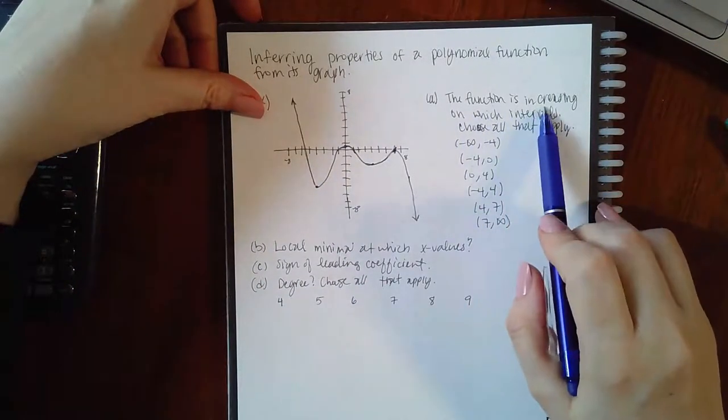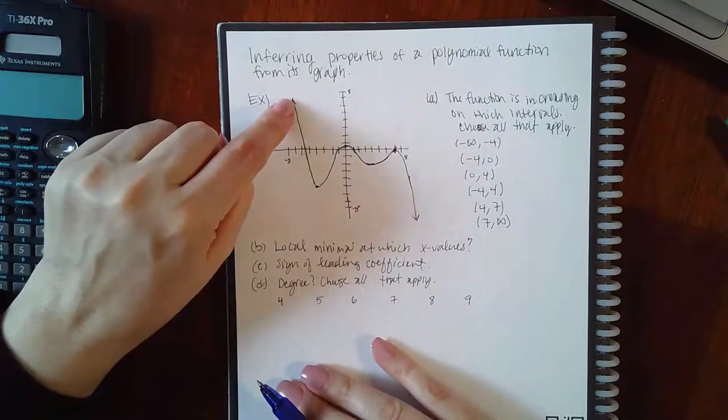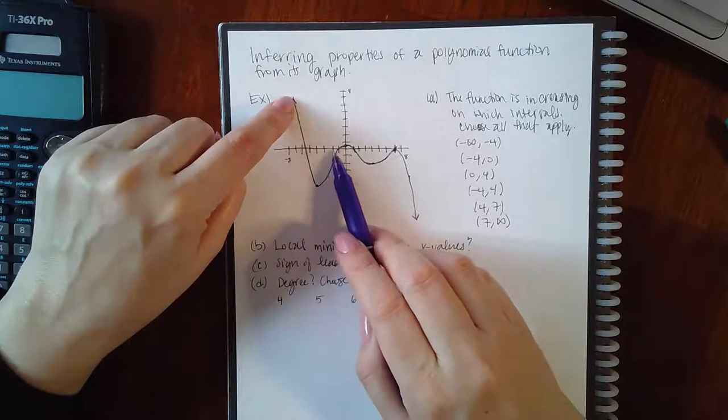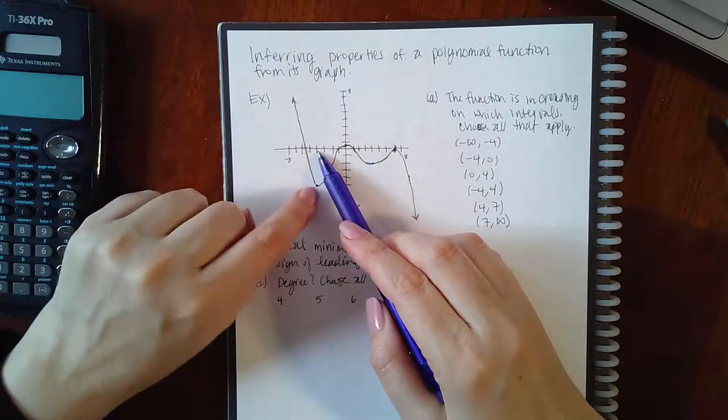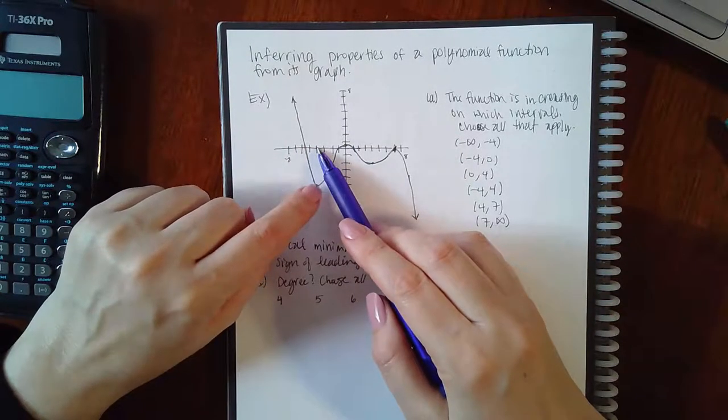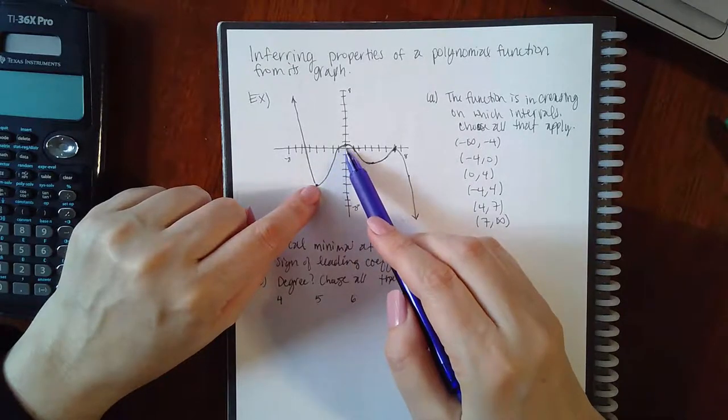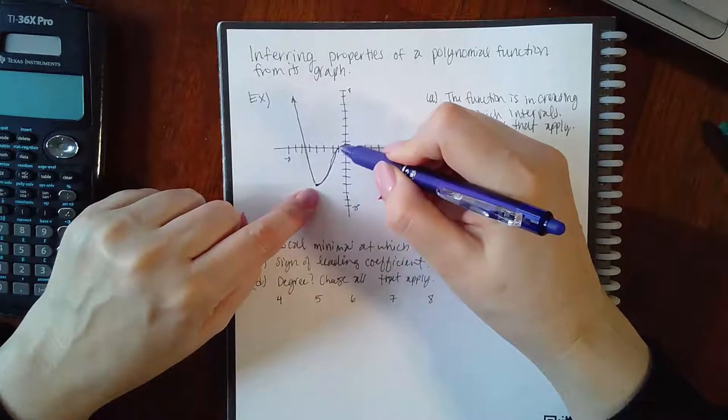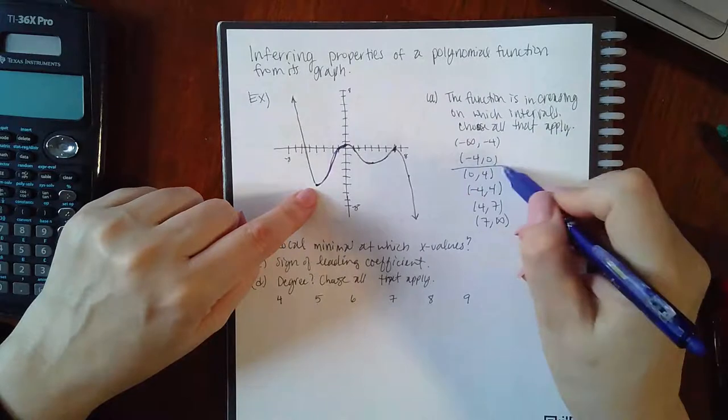It says the function is increasing on which intervals. Trace it from left to right. As I go from here, negative four is from here to here, I'm actually going downward so that is decreasing. But then from this x value, negative four to this point at x equal to zero, I am increasing. In this section I am increasing, and that interval is from negative four to zero. Always use the x values when doing intervals.